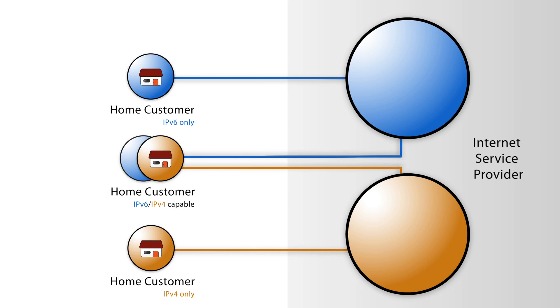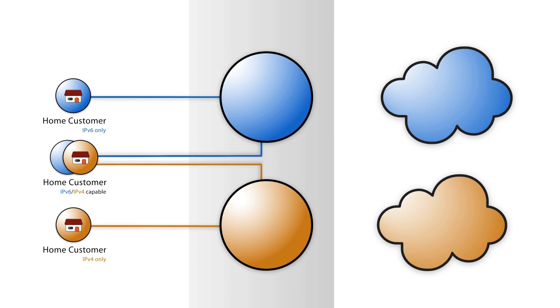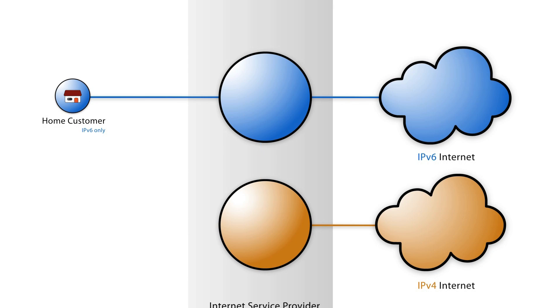Imagine you're an ISP that needs to connect a customer to both IPv4 and IPv6 Internet, but this customer only has public IPv6 addresses. How can the customer reach IPv4-only services?